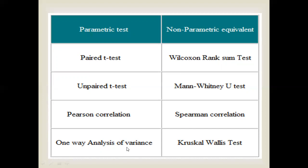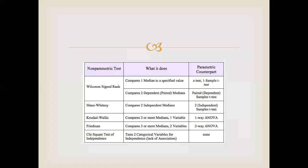To summarize: paired t-test (n1 = n2) → Wilcoxon rank sum test; unpaired t-test (n1 ≠ n2) → Mann-Whitney U test; Pearson correlation → Spearman rank correlation test; one-way analysis of variance → Kruskal-Wallis test. The Kruskal-Wallis test is very important.